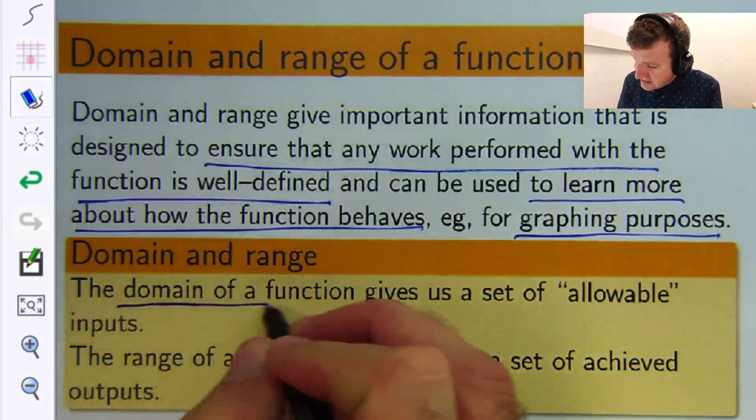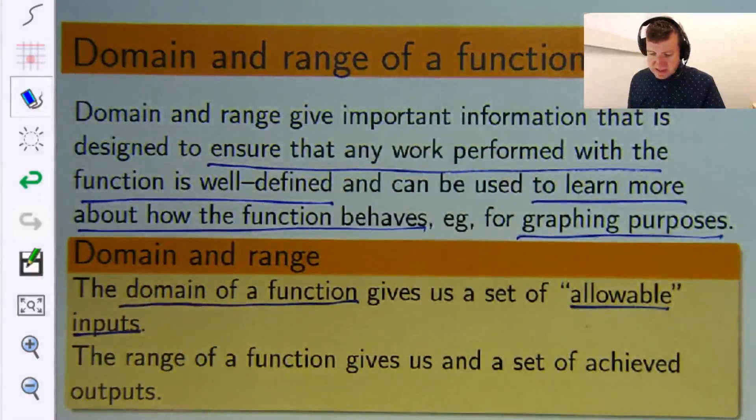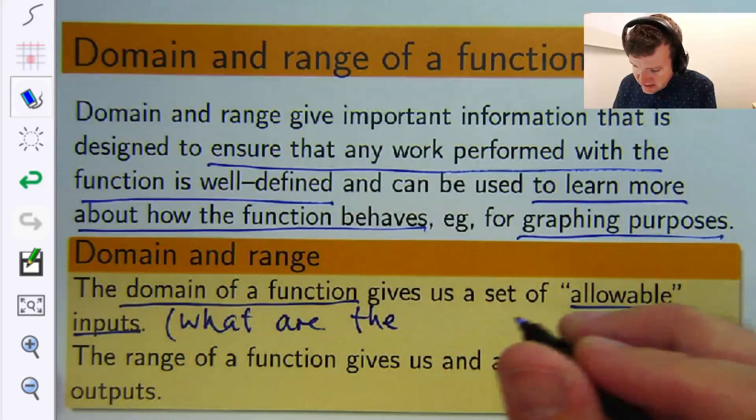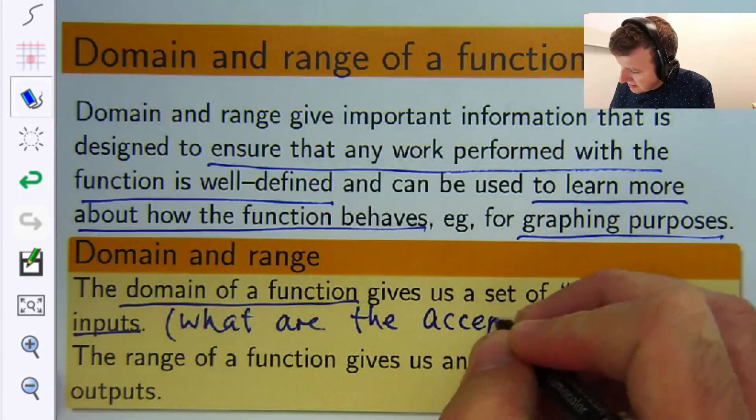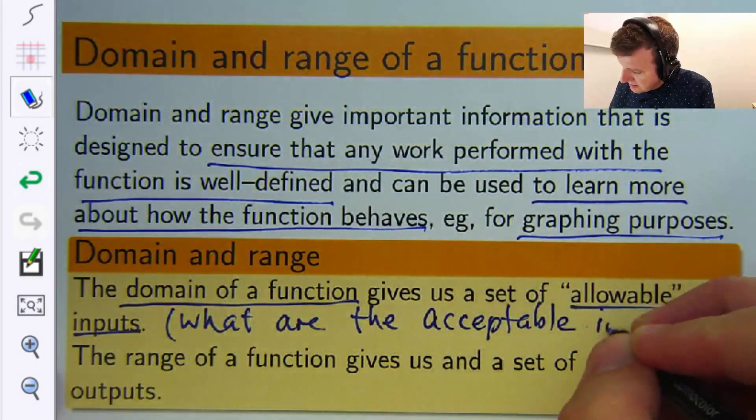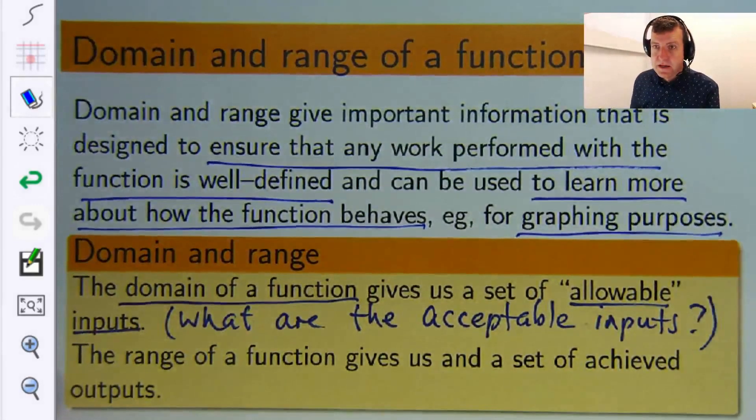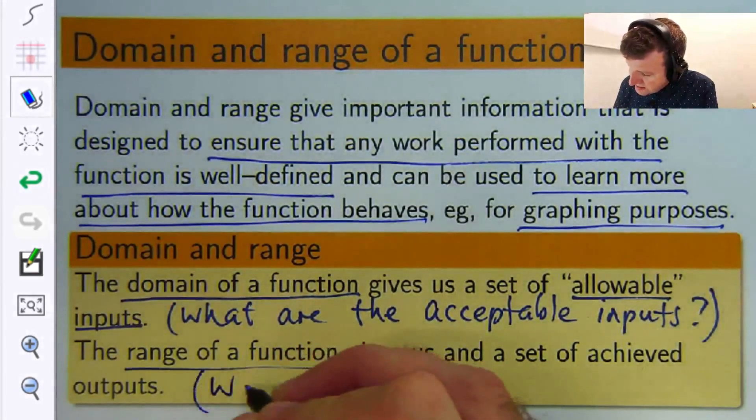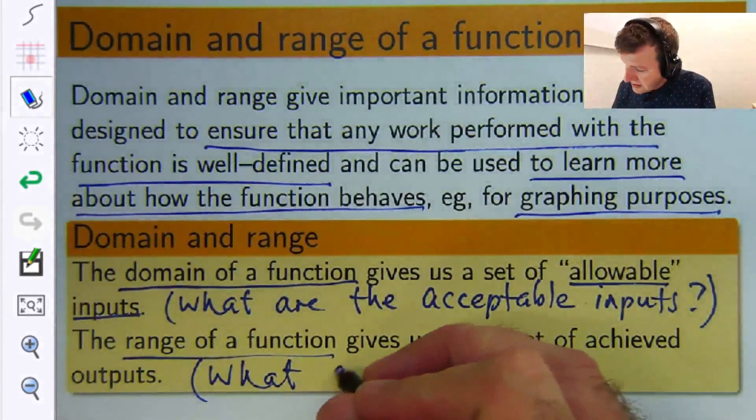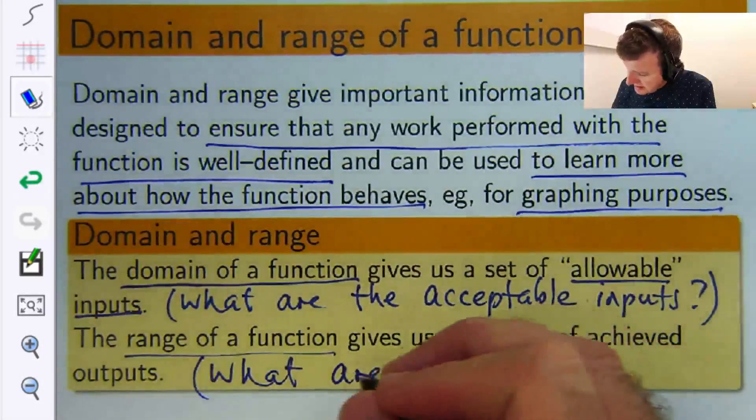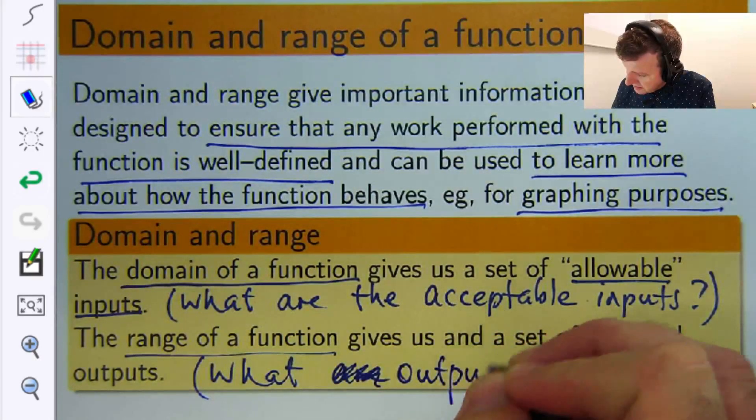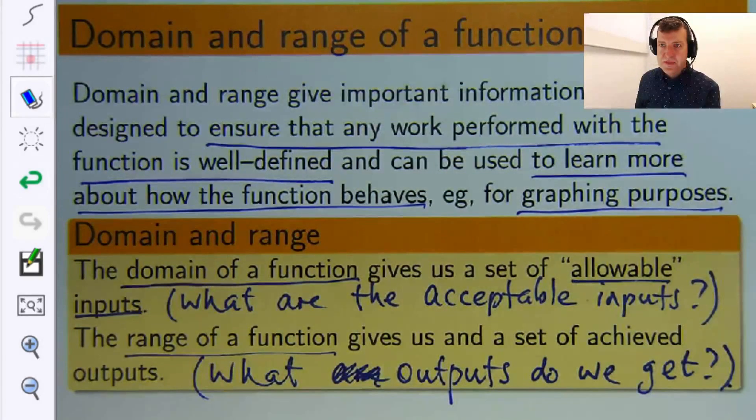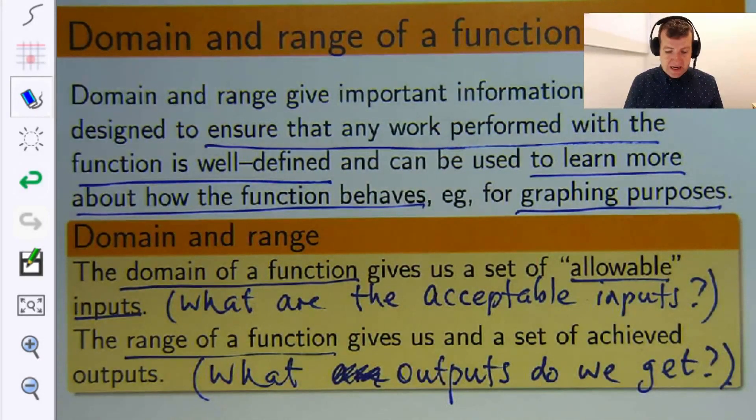The domain of a function gives us the set of allowable inputs. So what we're asking and answering is: what are the acceptable or allowed inputs? And the range of a function gives us a set of achieved outputs. So the question we're asking or answering is: what outputs do we get?